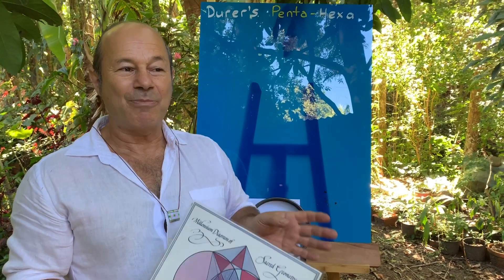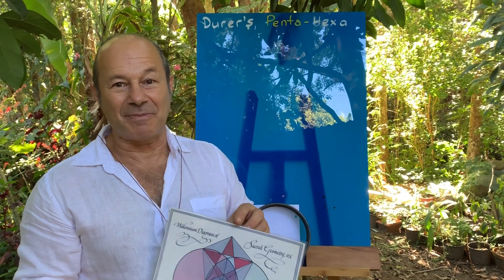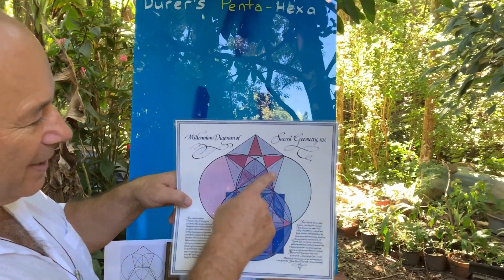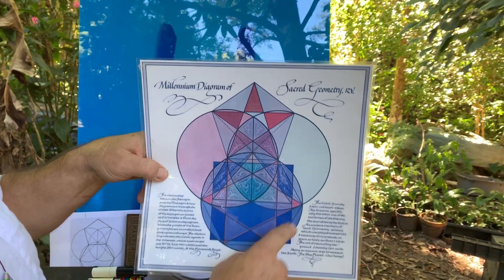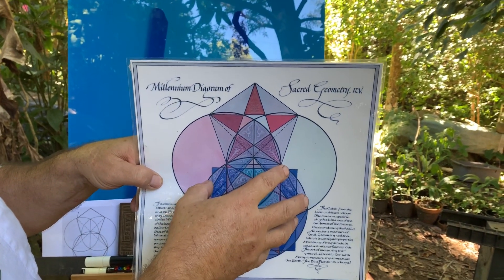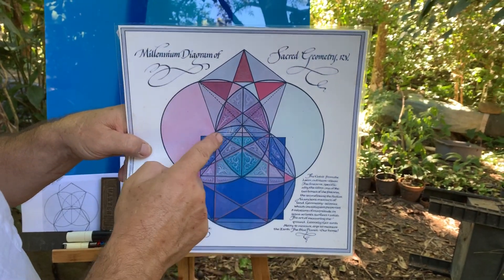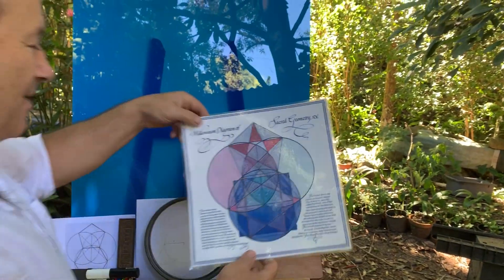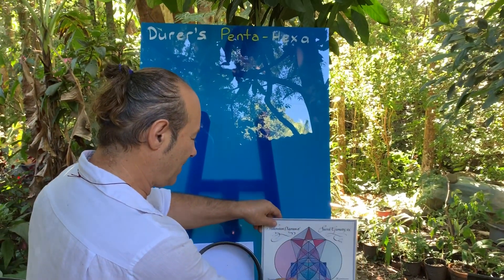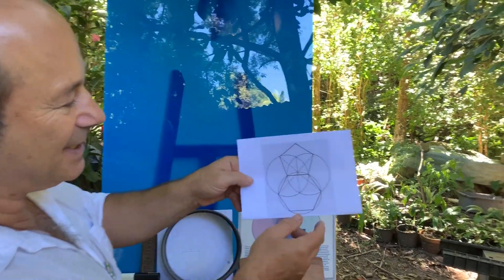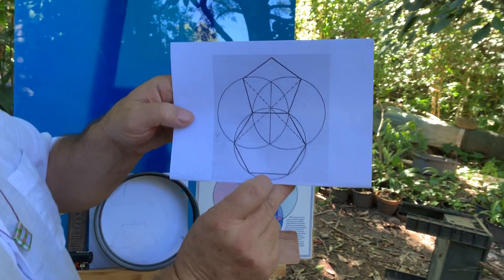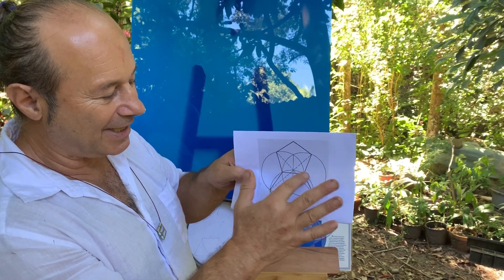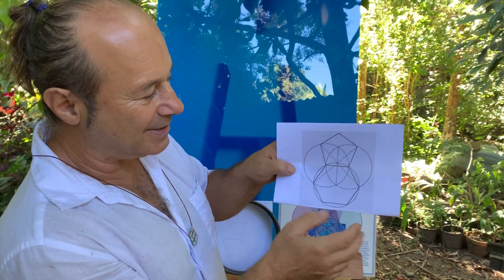I'd like to talk about Albrecht Dürer's construction of the pentagon and hexagon. Albrecht Dürer is famous for working with three circles — one, two, three — and down here we're going to get a hexagon. From the natural birth of the hexagon, he extracts the pentagon from the division of the circle into six. As a line drawing, we're going to do this on the board.